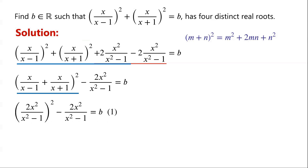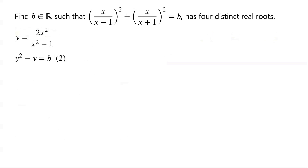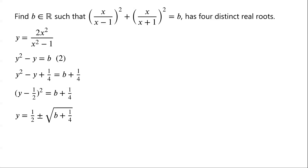Clearly it is a quadratic equation in 2x²/(x²−1). Now we let y = 2x²/(x²−1). Then equation 1 becomes y² − y = b. We label this as equation 2. Adding a quarter to both sides of equation 2, the left-hand side equals (y − ½)². So y = ½ ± √(b + ¼).